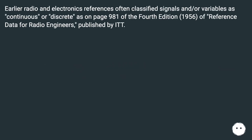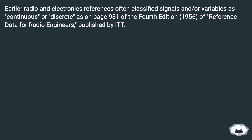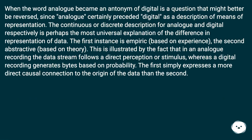Earlier radio and electronics references often classified signals and variables as continuous or discrete, as on page 981 of the 4th edition (1956) of Reference Data for Radio Engineers, published by ITT. When analog became an antonym of digital is a question that might better be reversed, since analog certainly preceded digital as a description of means of representation.